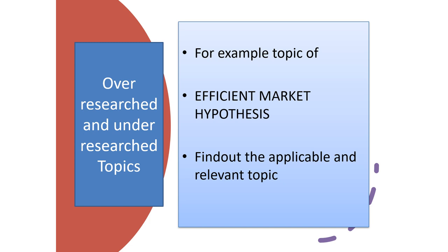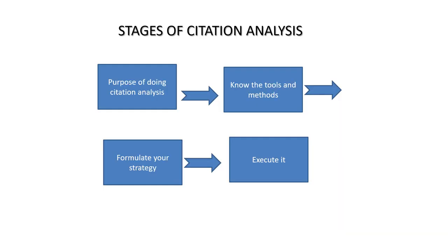For example, the topic of portfolio management and the Efficient Market Hypothesis — this is an area where the person who found the Efficient Market Hypothesis got the Nobel Prize, and the person who found the theory was wrong also got the Nobel Prize. So researchers were focused on both sides: one said the theory is good and applicable to the stock market, while other researchers argued the theory is not applicable in the stock market. Find out the applicable and relevant topic for your citation analysis.